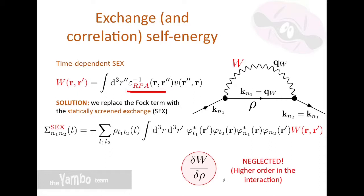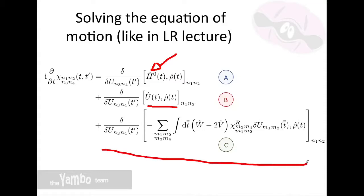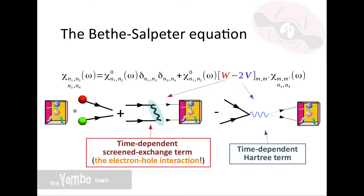Putting all terms together gives the density matrix equation, where I divided the commutator into three parts A, B, and C, each differentiated with respect to the total field. Parts A and B were derived in the linear response lecture: A gives the energy levels appearing in the denominator of the response function, and B gives the occupation factors appearing in χ₀. The new term C is responsible for the interaction between electrons and holes and for the local field effects. Performing the Fourier transform and assembling all terms yields the Bethe-Salpeter equation, where W is the term responsible for the bound state between electron and hole generated by the screened exchange.